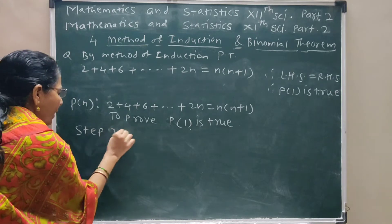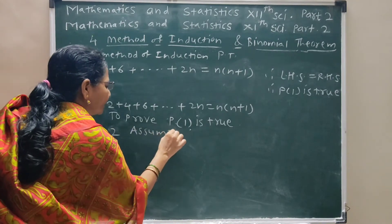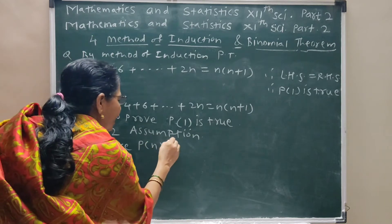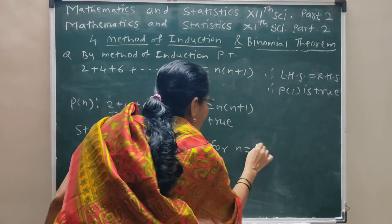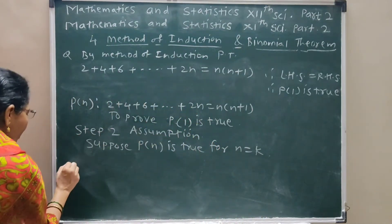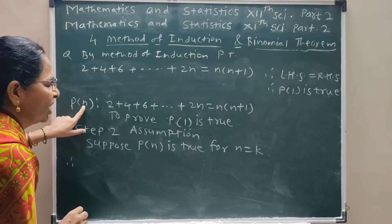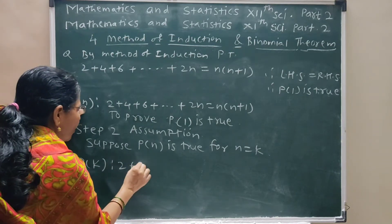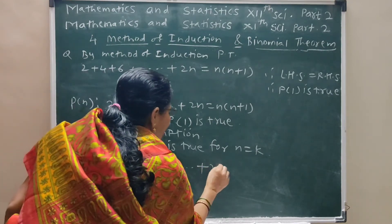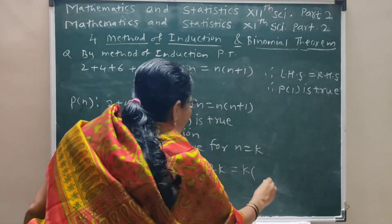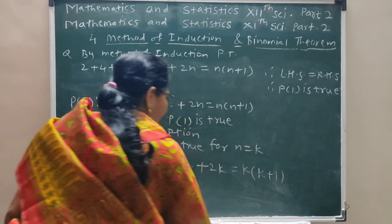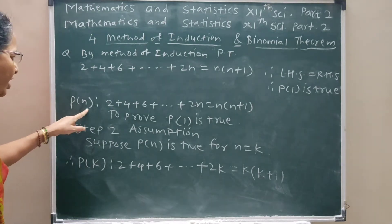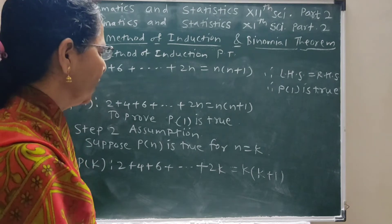Step 2: Assumption. Suppose P(n) is true for n = k. Replace n with k in the statement to get P(k): 2 + 4 + 6 + ... + 2k = k(k+1).